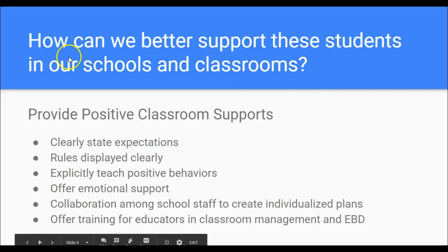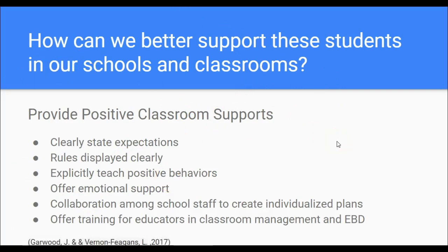Another way to support these students is by providing classroom supports. Positive classroom supports include clearly stating expectations so the student understands what is expected, giving step-by-step directions, and displaying rules clearly in the classroom. Teachers should also explicitly teach positive behaviors rather than simply getting students in trouble, since students sometimes don't understand what positive behavior looks like and need it modeled for them.